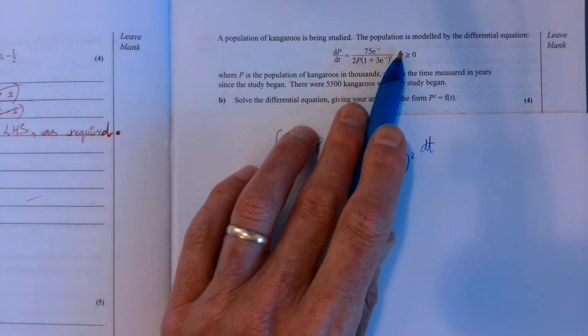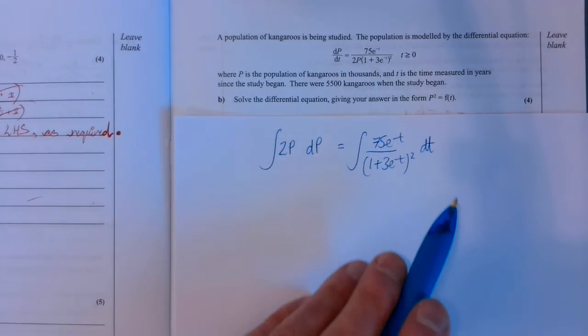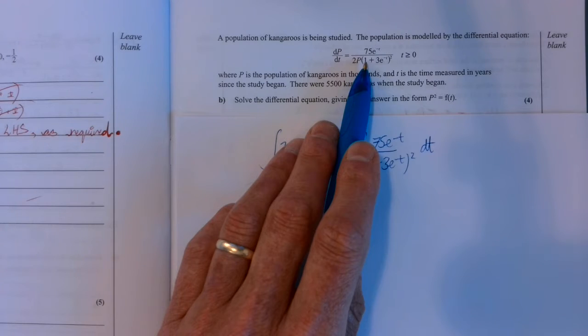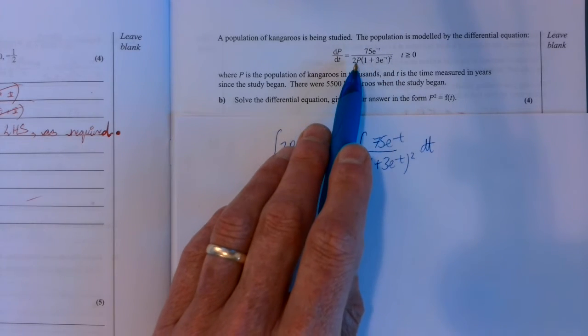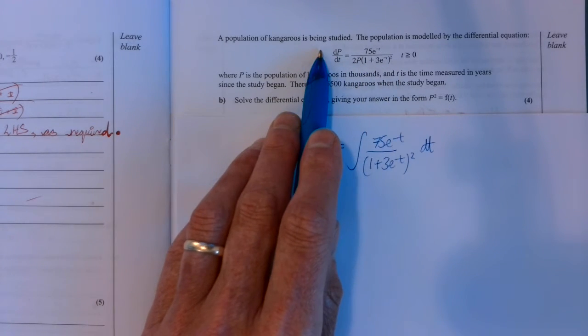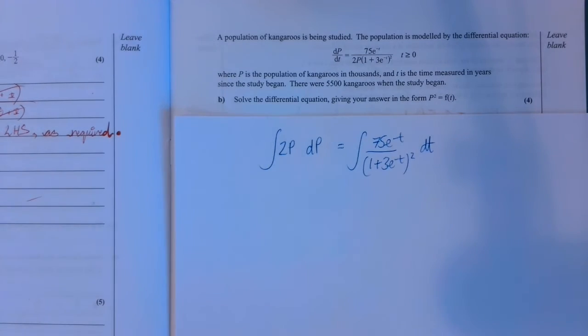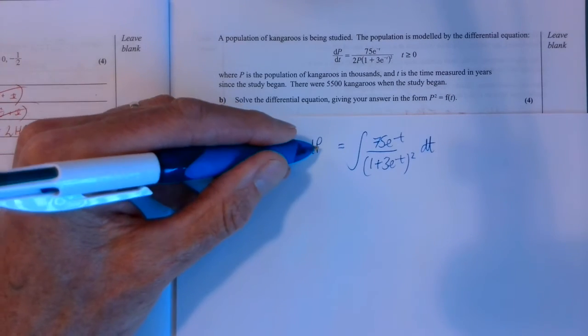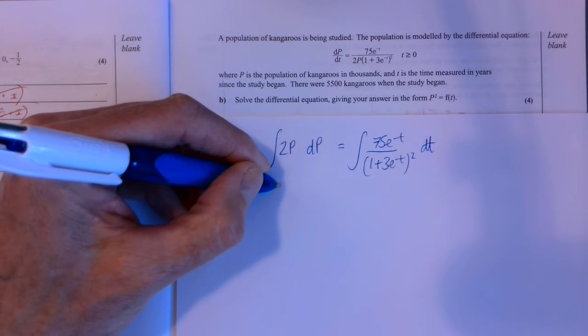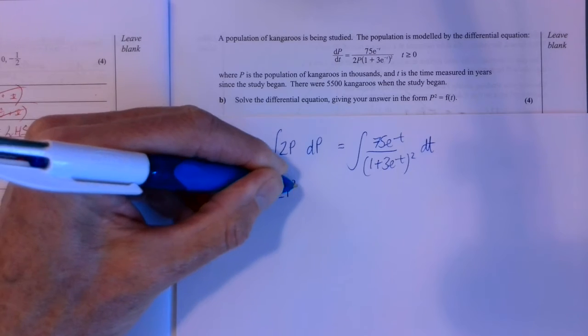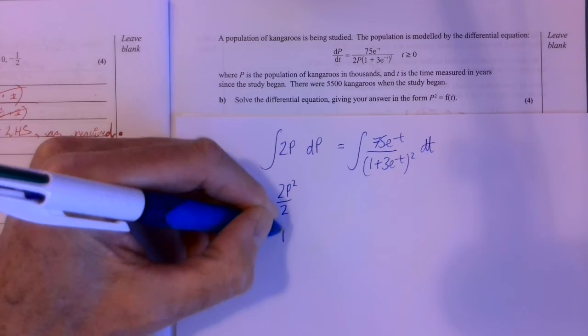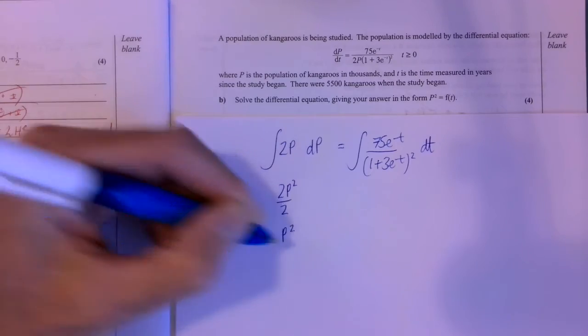I'm going to move the dt over here and have everything with a t in it on this side. So the 75 e to the minus t and the bracket squared. And then that 2p I'm going to multiply both sides by, so that pops up over here. And then I'm going to integrate separately. So here integrating 2p with p as the variable gives you 2p squared, increased power by 1, divided by the new power which is just p squared.